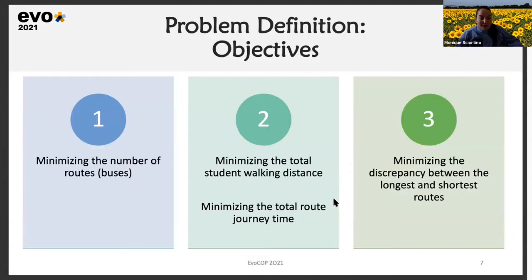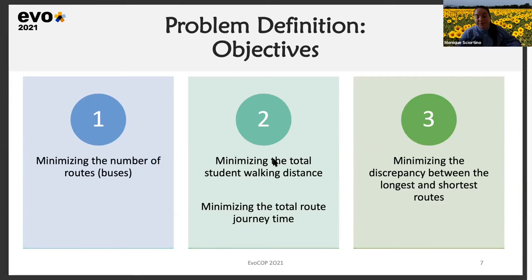The objectives of our problem operate on three different levels. On the primary level, we want to minimize the number of routes — the number of buses — since each bus has operational costs including acquisition cost and driver salary. On the secondary level, we want to minimize the total student walking distance and the total route journey time, treated at the same level. On the tertiary level, we minimize the discrepancy between the longest and the shortest routes in the solution, so as to guarantee equity.